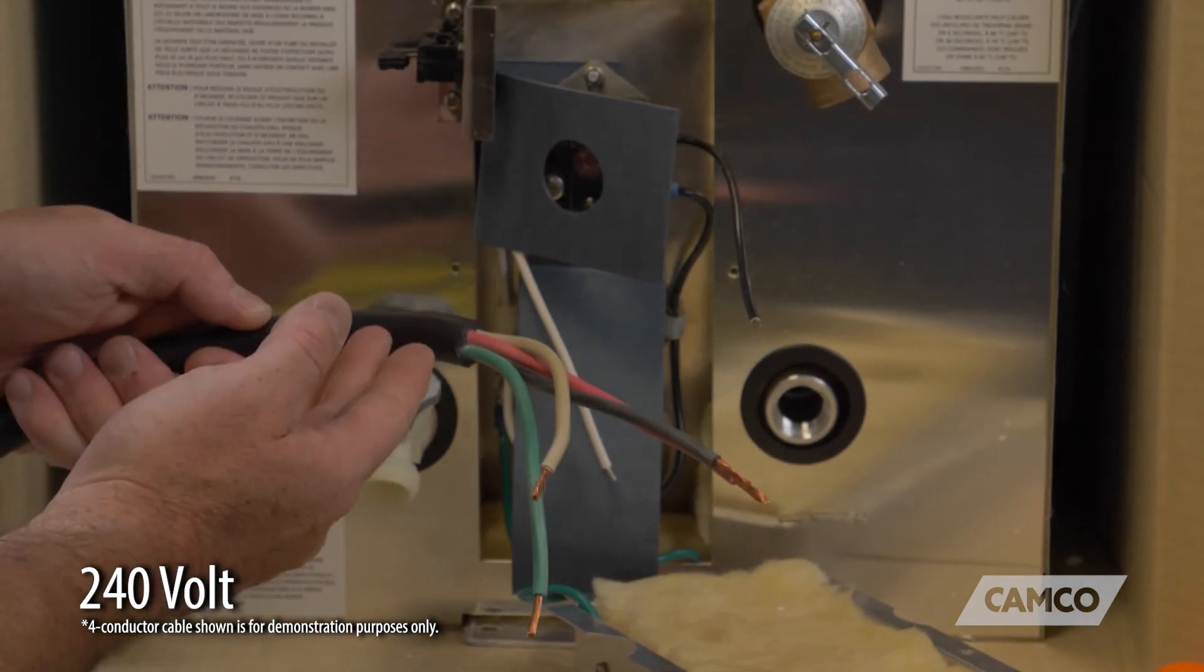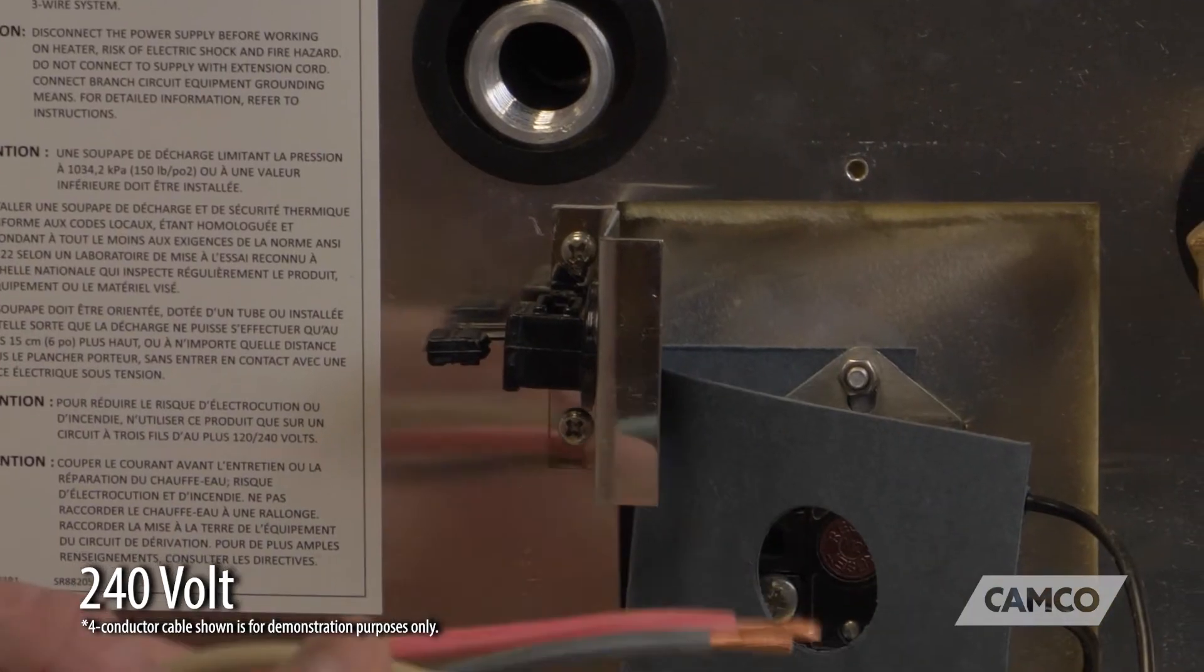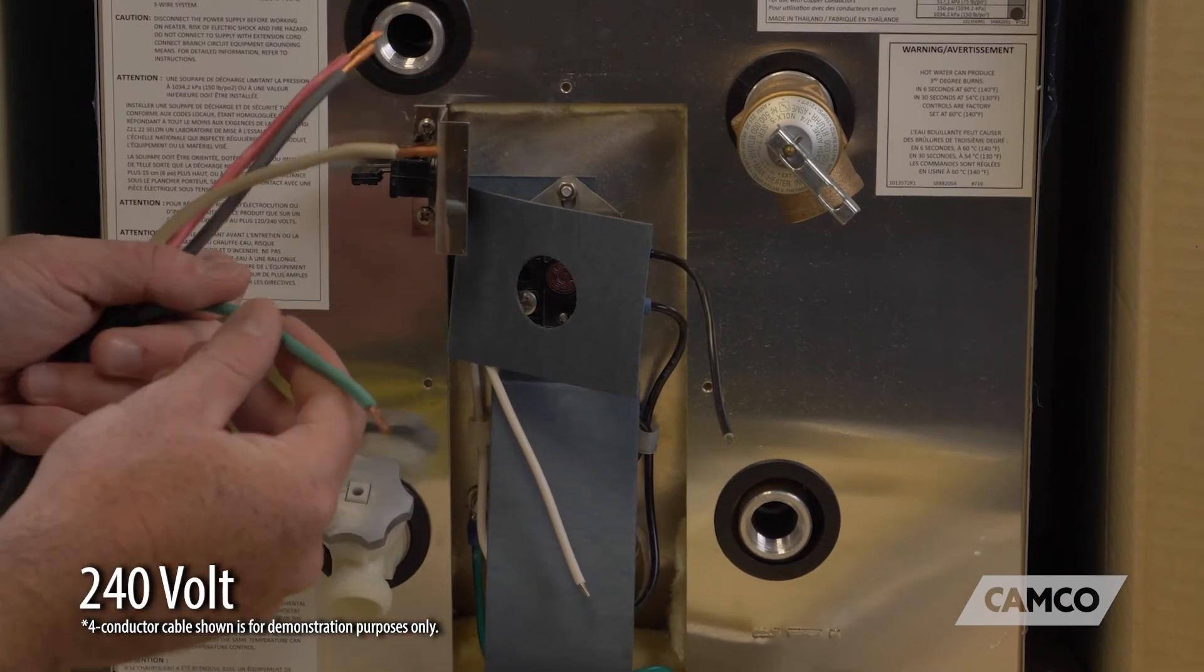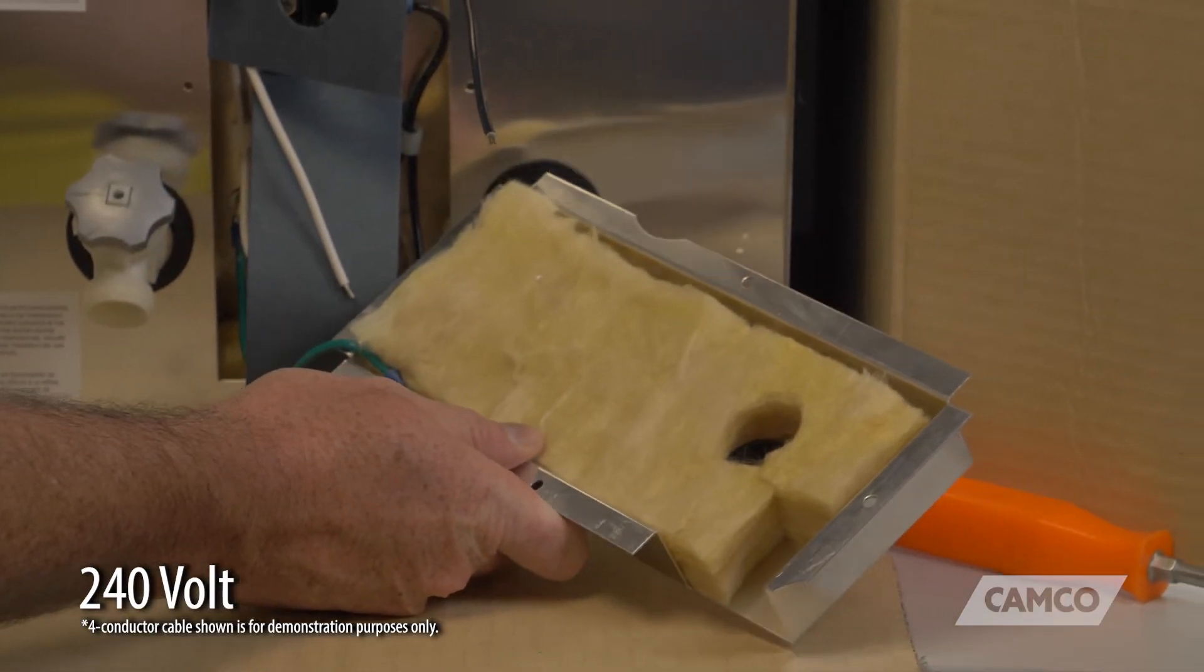In order to hook this up, you're going to run your cable through your strain relief clamp, and you're going to connect your green to your ground. This particular water heater, we've got the ground connected to the access panel. We stopped doing that after a certain date due to revision in the standards.